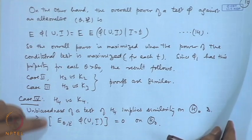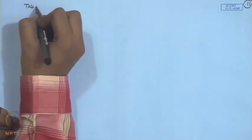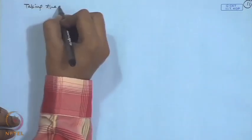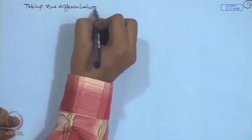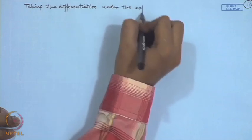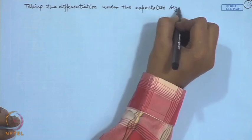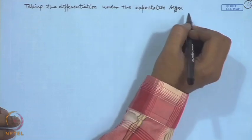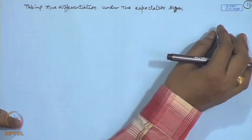Now, we take this derivative inside the expectation sign, taking the differentiation under the expectation, which will be permissible here because phi is a test function. So, it is bounded between 0 and 1 here.